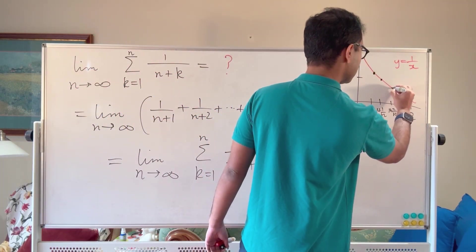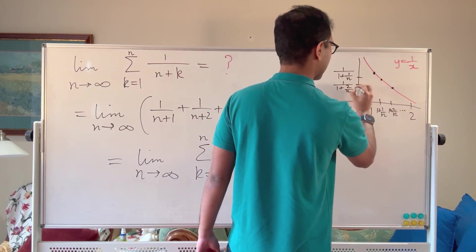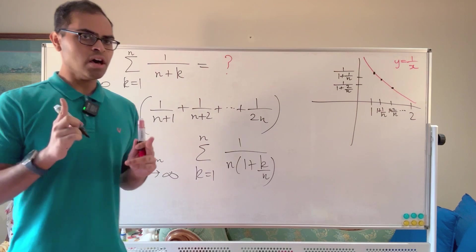Then when you've got x equals 1 plus 2 over n, your point on the graph is going to be 1 over 1 plus 2 over n. So this is all well and good.